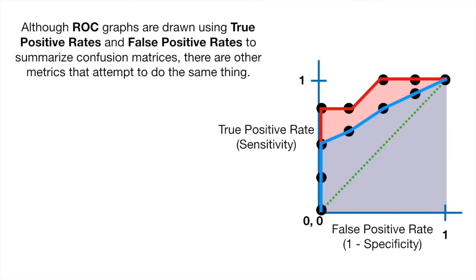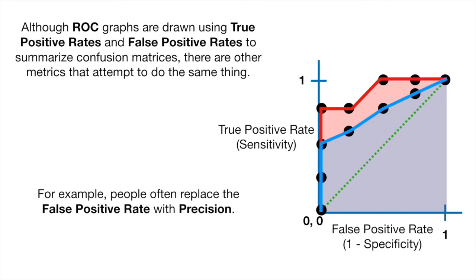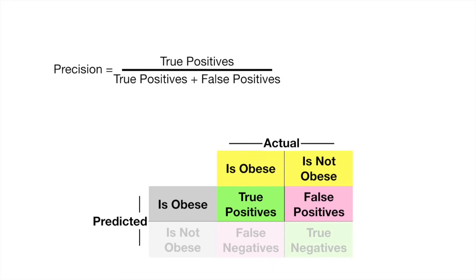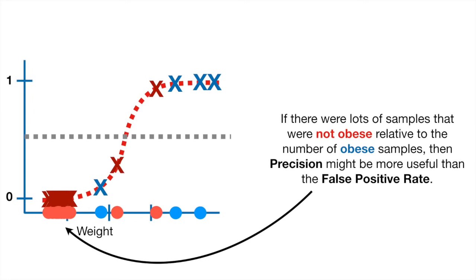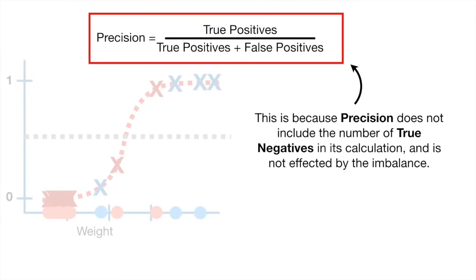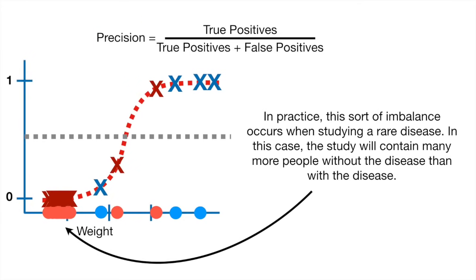One last thing before we're done: although ROC graphs are drawn using true positive rates and false positive rates, there are other metrics that attempt to do the same thing. For example, people often replace the false positive rate with precision. Precision is the true positives divided by the sum of true positives and false positives — it's the proportion of positive results that were correctly classified. If there were many more not-obese samples than obese samples, precision might be more useful, because precision does not include true negatives and is not affected by that imbalance. This imbalance occurs in practice when studying a rare disease.